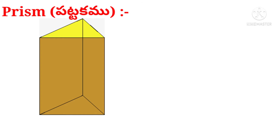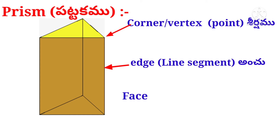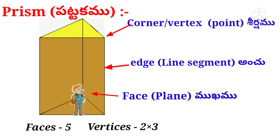Now let us see the picture of a prism. Observe that the base and the ceiling are both triangular in shape, and the sides are rectangular. Suppose a boy entered a room in the shape of a prism. He observed three walls — three faces — plus one flooring face and one ceiling face: total five faces. He observed three vertices in the flooring and three in the ceiling — three plus three equals six vertices. He observed three edges in the flooring, three in the ceiling, and three in the sides — total nine edges.